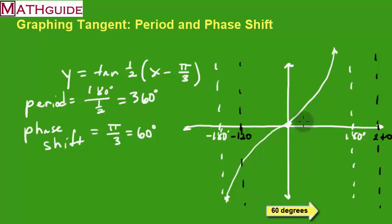So instead of going through zero, it's also going to be shifted over, and that would be 60 degrees. It's going to go through 60. So let's let the asymptotes guide the curve, and there you go.